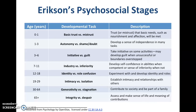Ages twelve to eighteen, the preteen and teen years, is the period of identity versus role confusion. Kids are working to figure out who they are, what's important to them, and how they fit into the bigger picture of society.